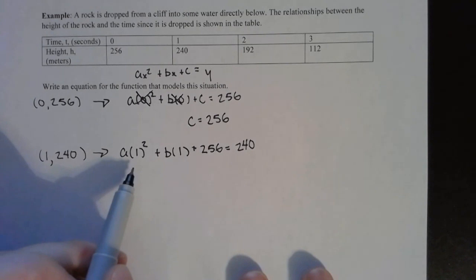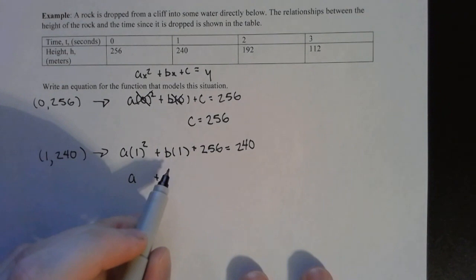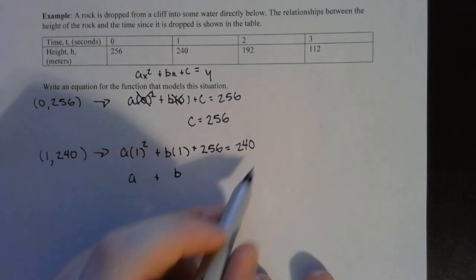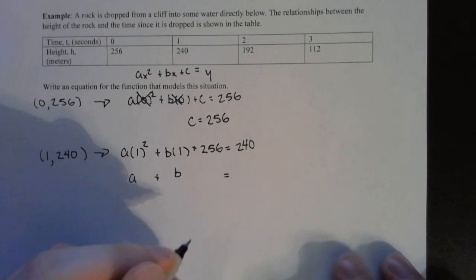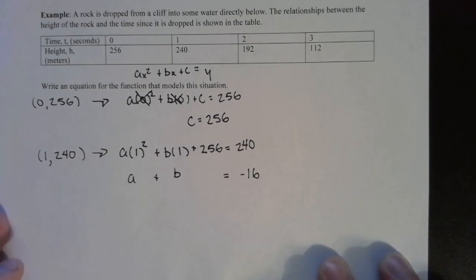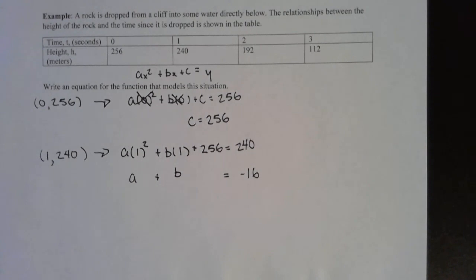Now we can do some simplification here. One squared is just one. A times one is a. B times one is just b. And we can go ahead and subtract this 256 to the other side. 240 minus 256 is going to be negative 16. I think that's as simple as we can get this equation.